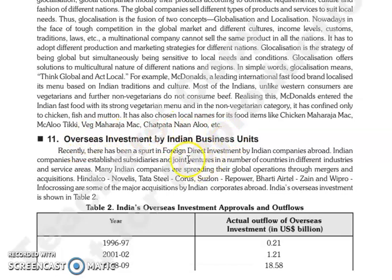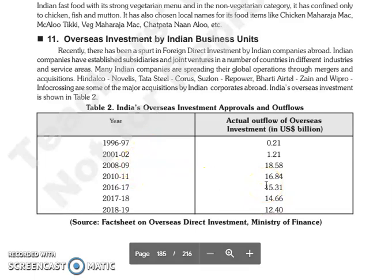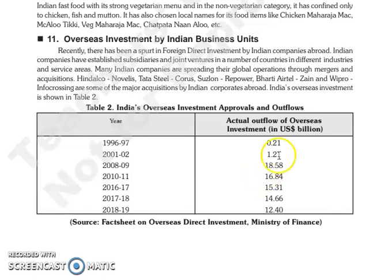The next topic is overseas investment by Indian business units. Recently, foreign direct investments by Indian companies abroad have increased. Indian companies have established their own subsidiaries and joint ventures in a number of countries across different industries and service areas. Many Indian companies have spread their global operations through mergers and acquisitions, such as HCL, Novelis, Tata Steel-Corus, Suzlon-Repower, Bharti Airtel, Zenco, Wipro, and Infocrossing — these are some major acquisitions that Indian corporations have done abroad.